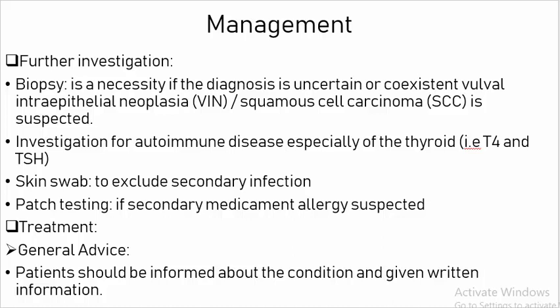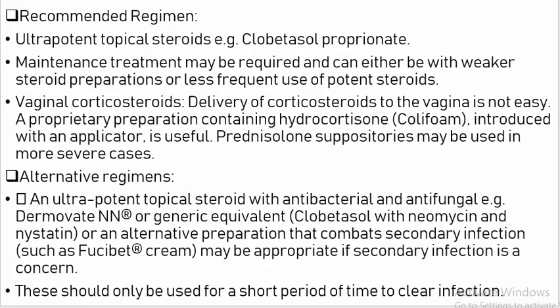Treatment — General Advice: Patients should be informed about the condition and given written information. Recommended regimen: Ultra-potent topical steroids, for example clobetasol propionate. Maintenance treatment may be required and can be with weaker steroid preparations or vaginal corticosteroids. Alternative regimen: Ultra-potent topical steroid with antibacterial and antifungal agents, for example Dermovate or generic equivalent clobetasol with neomycin and nystatin, or alternative preparations that combat secondary infections such as fusidic acid cream. This should only be used for a short period of time to clear infection.